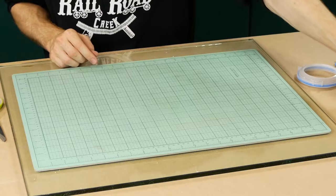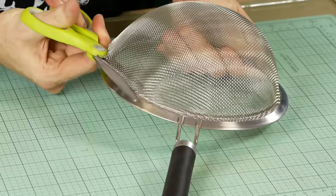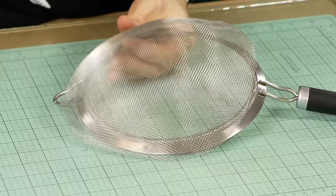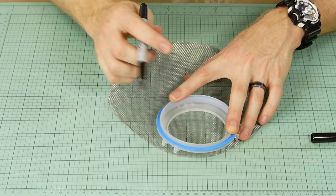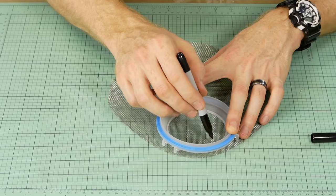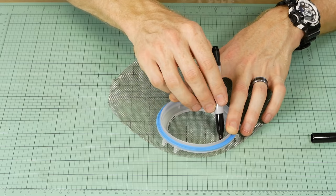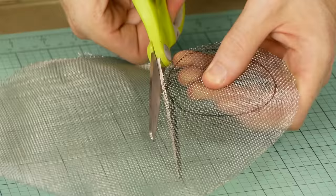To use the strainer mesh, we'll first need to remove it from the handle. An old pair of scissors should be enough to cut the mesh. Once it's free, gently flatten it out. Using the lid as a guide, I trace the inner area around the lid onto the mesh.